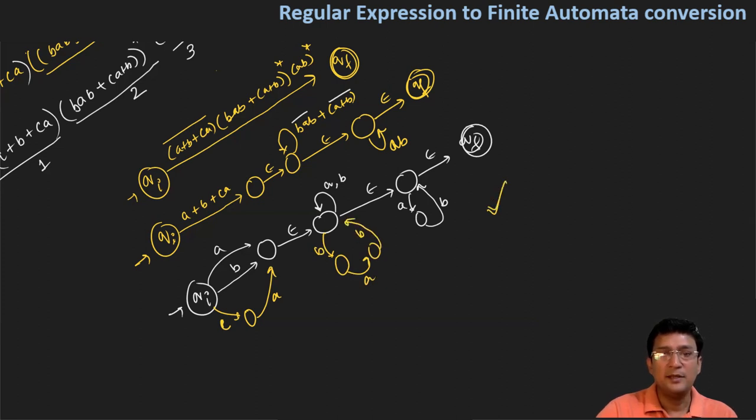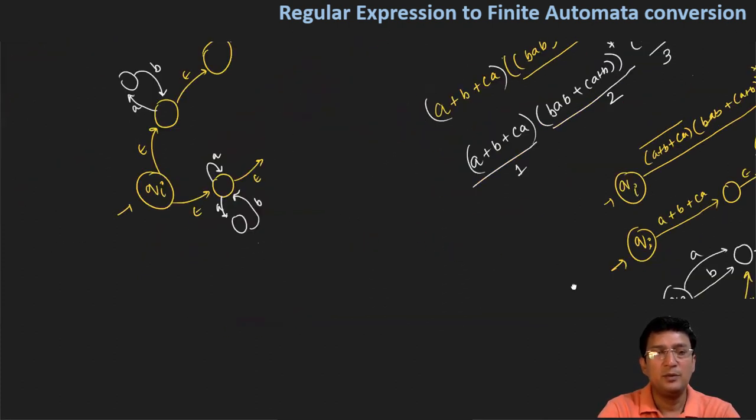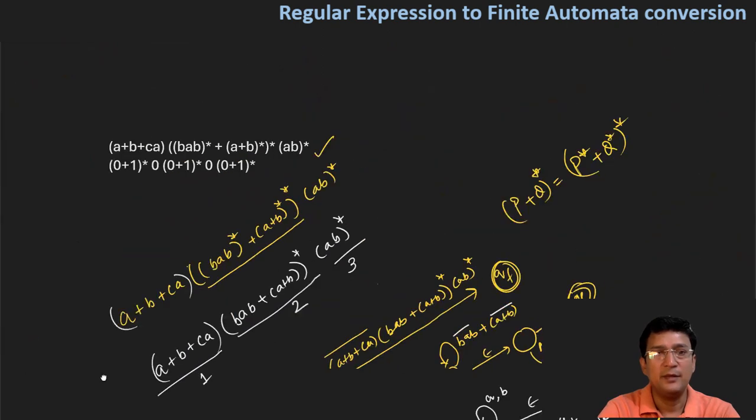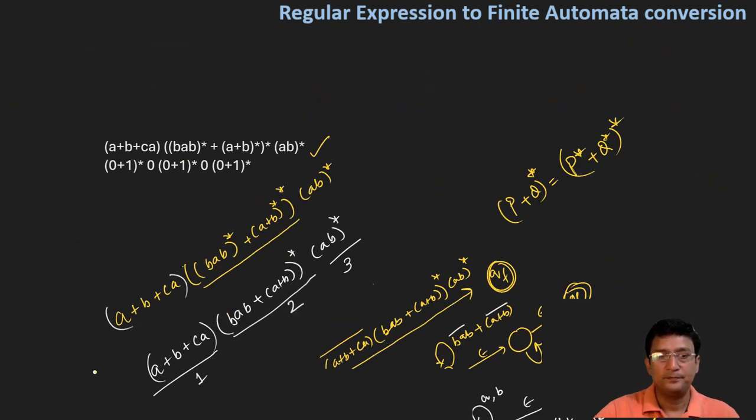This completes the finite automata for the given regular expression. Let's take another example. This one is simpler: (0+1)*0(0+1)*0(0+1)*.